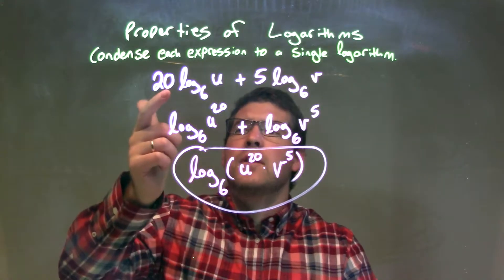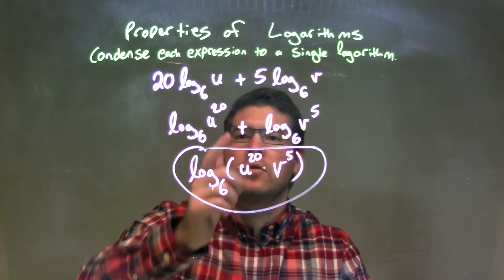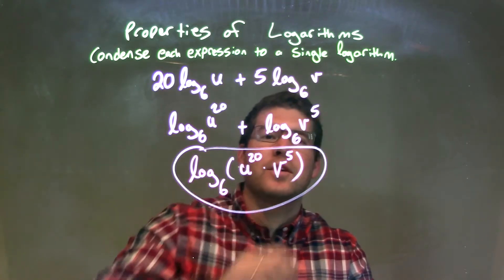Well, there's a number in front of each one of the logs. I put that as the exponent of the variable that's inside of the log. So we have u to the 20th power here, and v to the 5th power there.